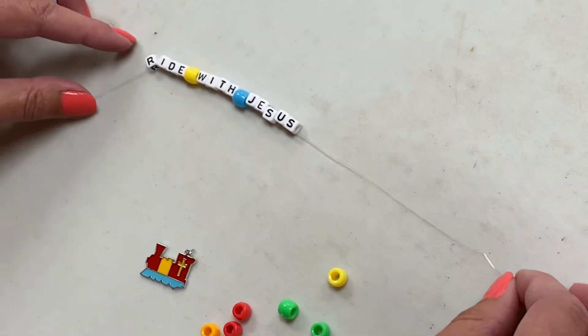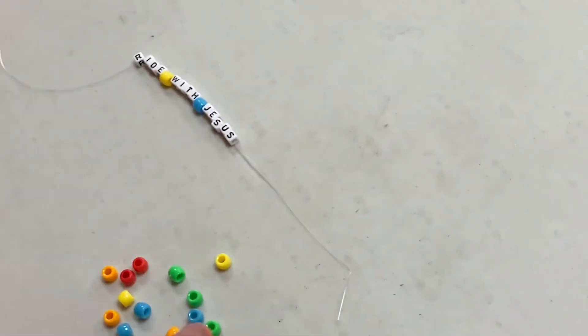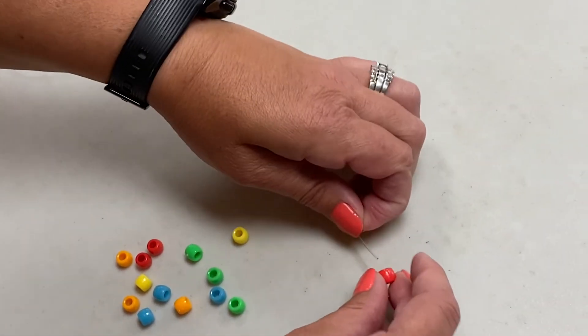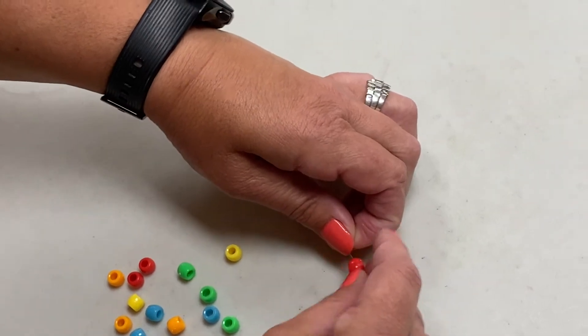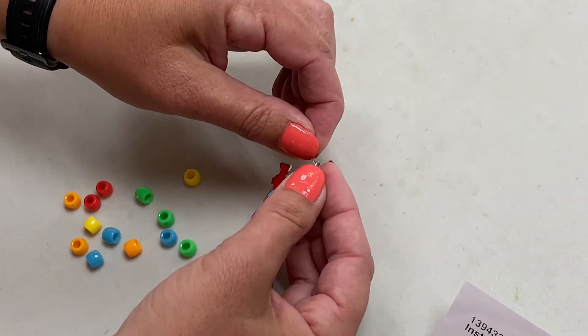All right, now because it's your bracelet, you can put the charm anywhere you want to, but I'm just going to put one more color. I'll pick red. Okay, put my red bead through here, and then now you get to decorate however you want to.